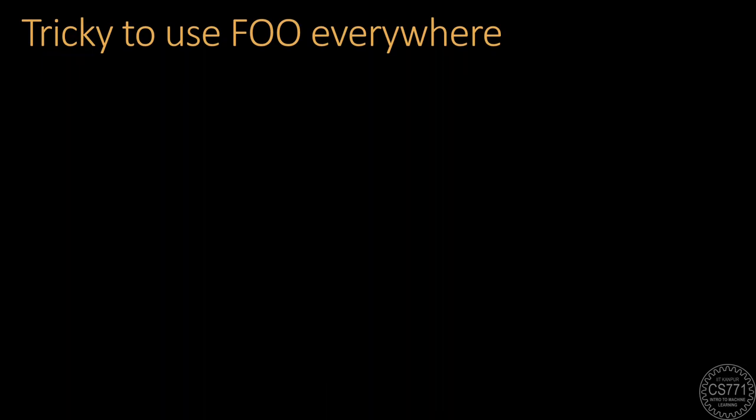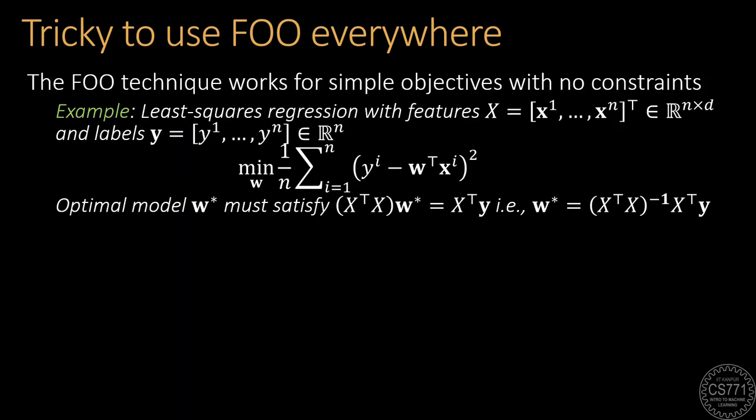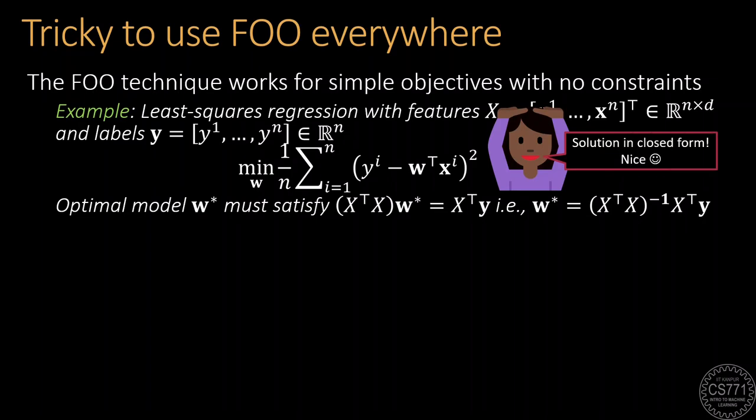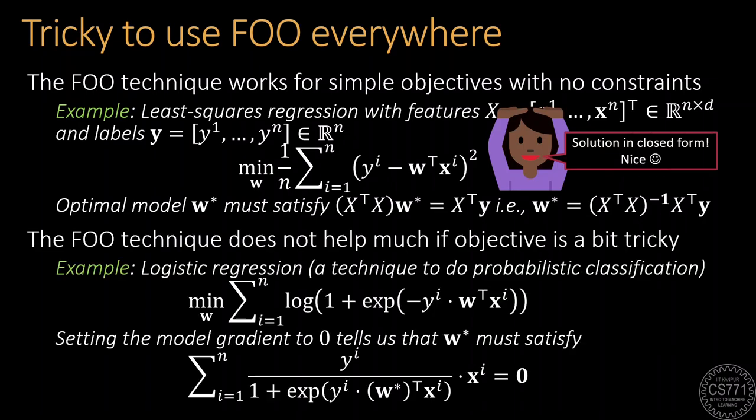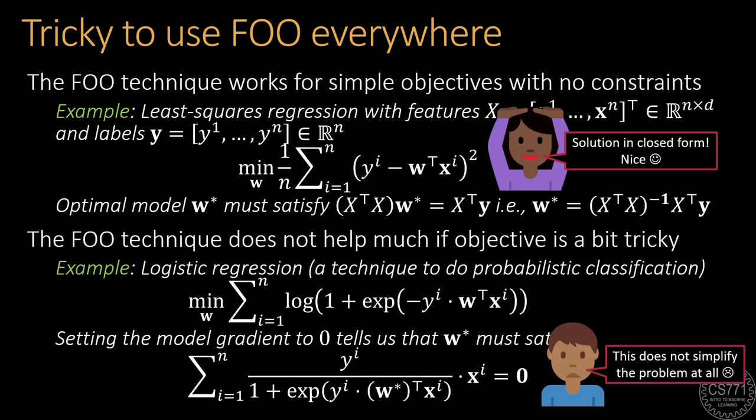For example, in a previous discussion, we have seen that for least squares regression with the least squares loss, applying FOO gives us the solution in closed form. That is, we have a formula that evaluates to the optimal model. However, if we replace this least squares loss with say the logistic loss, which we will study in a future discussion, applying FOO tells us that the optimal model must satisfy this complicated looking equation, which does not simplify the problem at all.